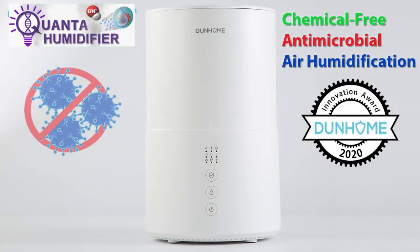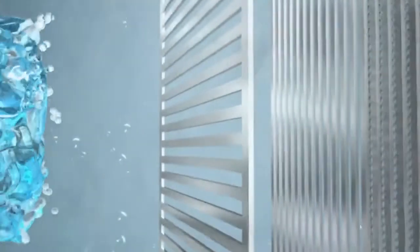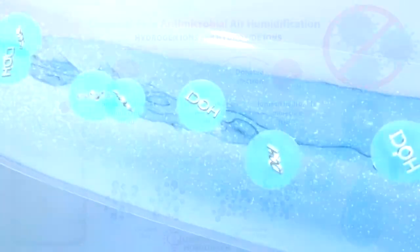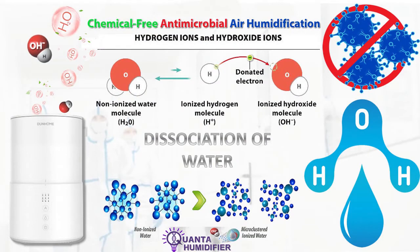What happens inside the Quanta humidifier doesn't stay inside the Quanta humidifier for long. The electrolysis process causes atoms in water to gain or lose electrons in order to form ions in a process called ionization. Compounds formed in this way are called ionic compounds. When ionic compounds dissolve in water, their ions are separated from one another in a process called dissociation.